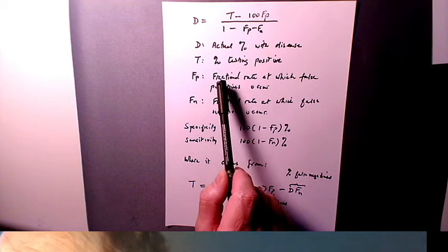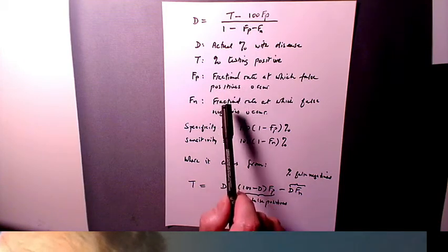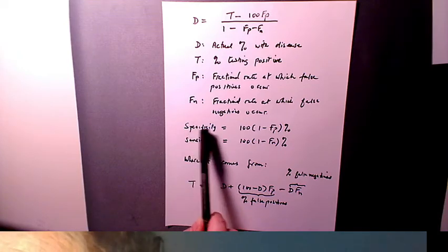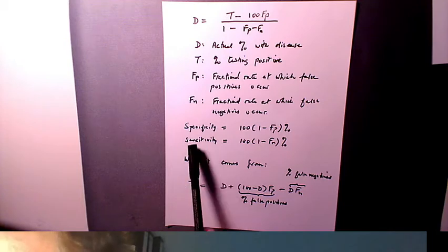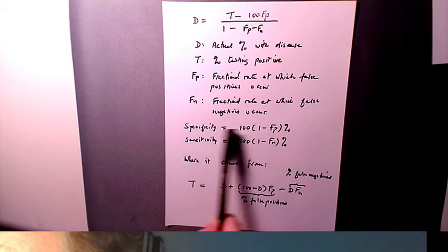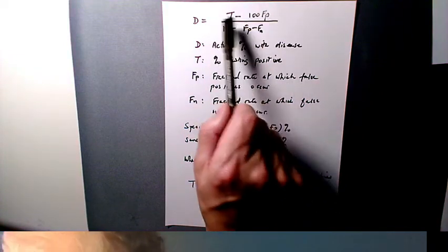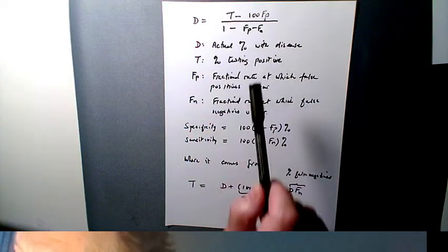And if you want to relate Fp and Fn to what the epidemiologists use, they use something called the specificity and the sensitivity, and the relationship is given there. And just to show where this all comes from, or where this simple result comes from, and anybody can apply this.